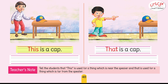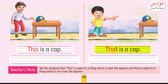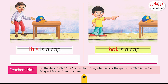Dear children, look at the next picture and tell me — is the cap close to the girl? The boy is pointing to the cap, which is close to the girl but far from the boy. So we use 'that' for things that are far. 'That is a cap.' Dear children, you have to copy this sentence and write it in the space.